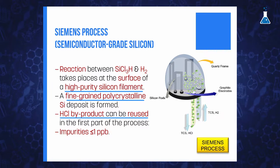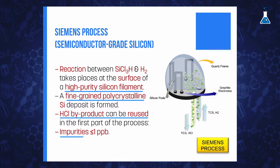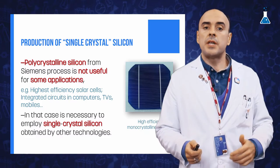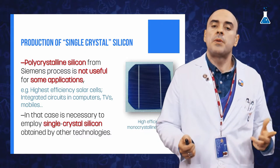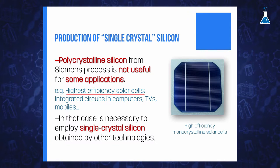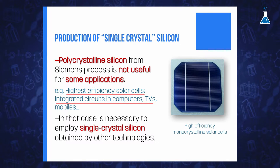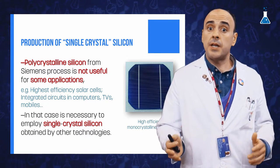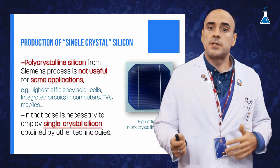Silicon produced by the Siemens process is called semiconductor grade silicon, which usually has an impurity level of one part per billion or even less. However, polycrystalline silicon obtained from the Siemens process may not be useful for some applications such as highest-efficiency solar cells or for making semiconductor devices such as integrated circuits used in computers, TVs, mobile phones, or other electronic devices. For these uses, it is necessary to employ single crystal silicon, and to accomplish that there are two important technologies.